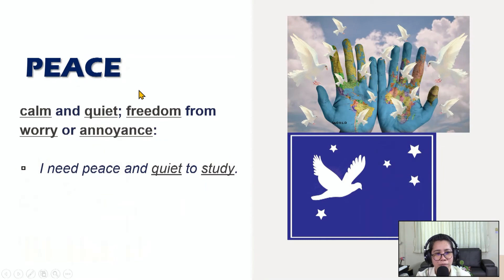Next we have peace. Peace is the calm and quiet, freedom from worry or annoyance. And the dove here is a symbol of peace. A sentence: I need peace and quiet to study.